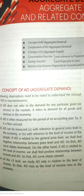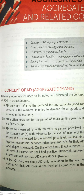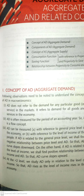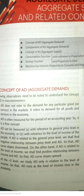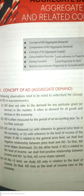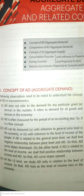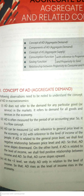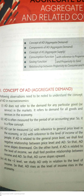Next, AD can be measured with reference to the general price level in the economy or with reference to the level of income of the people. When talking about aggregate demand, we consider two things: one is the general price level running in the economy — whether the economy is in inflation or deflation, i.e., whether overall goods and prices are increasing or decreasing.